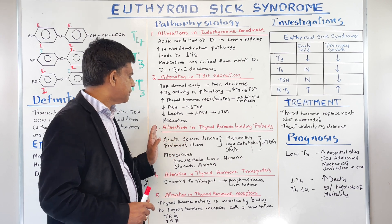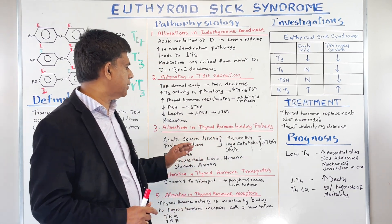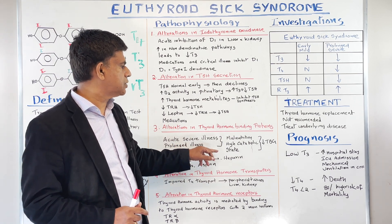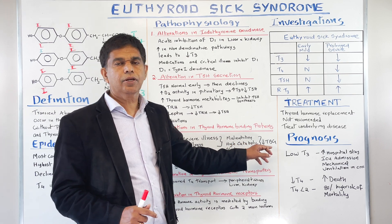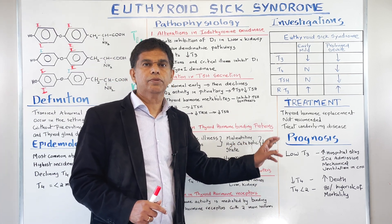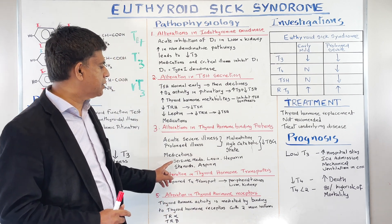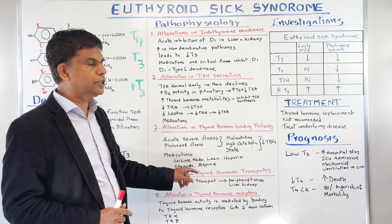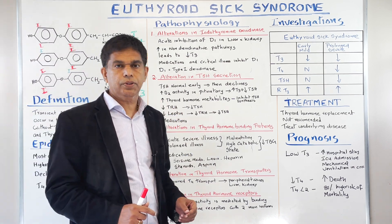Number three: alteration of the thyroid hormone binding protein. When you have acute severe illness and prolonged illness, there is malnutrition and a high catabolic state — that will cause total thyroid binding globulin to be decreased. Medications that alter thyroid binding protein include seizure medications, Lasix, Heparin, steroids, and aspirin.